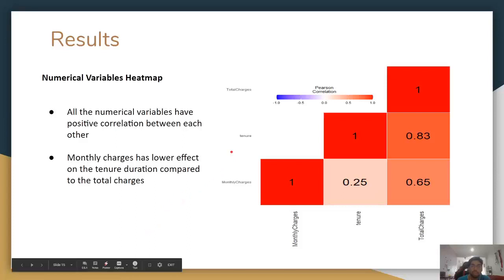For the next part of the results, we've created a heat map of the numerical variables to see the correlation between these numerical variables. What we observe is that all the numerical variables have positive correlation with each other based on this Pearson correlation. Tenure has 0.25 correlation with monthly charges, 0.83 with total charges, and monthly charges has 0.65 positive correlation with total charges. What we can see here is that monthly charges has lower effect on the tenure duration compared to the total charges, 0.25 as compared to 0.83. This simply means that low monthly charges doesn't necessarily mean that the tenure of the customer will be longer, because it has lower correlation as compared to total charges.